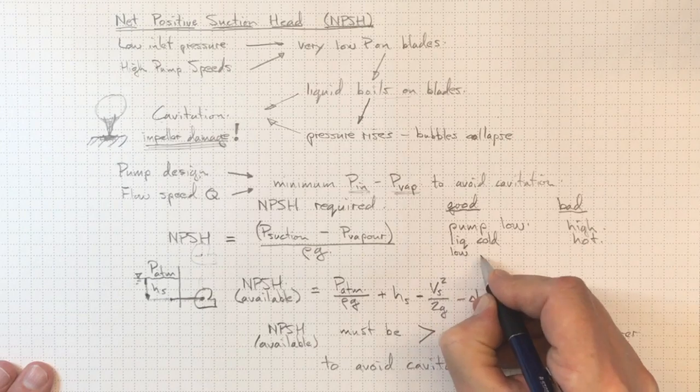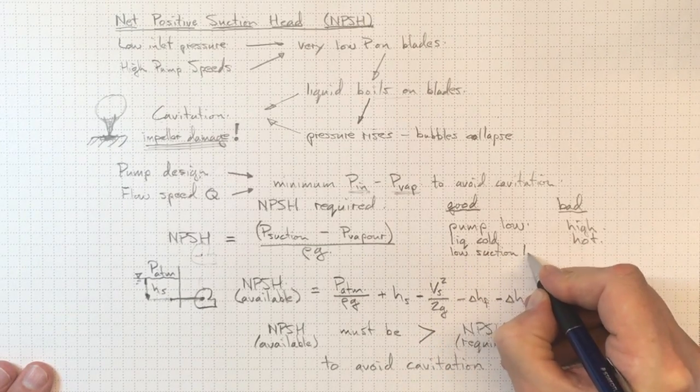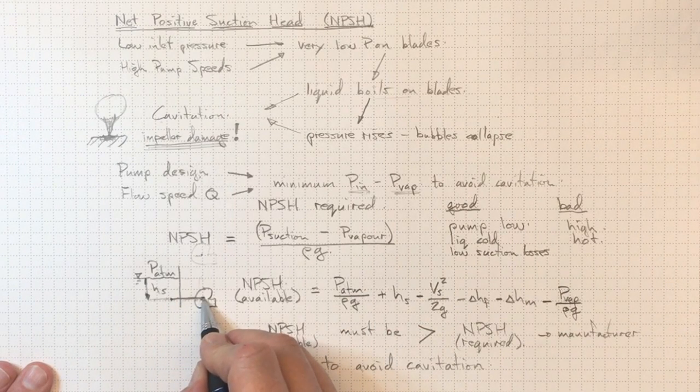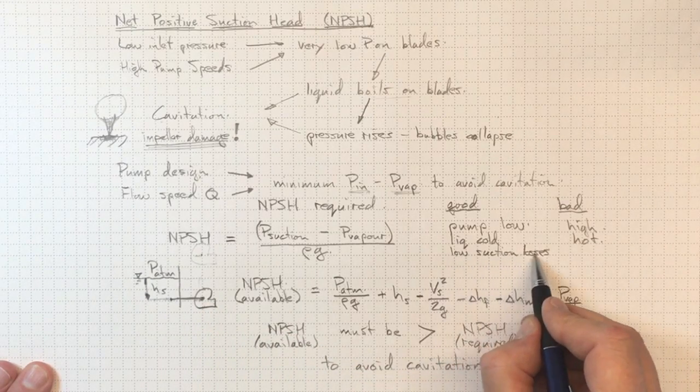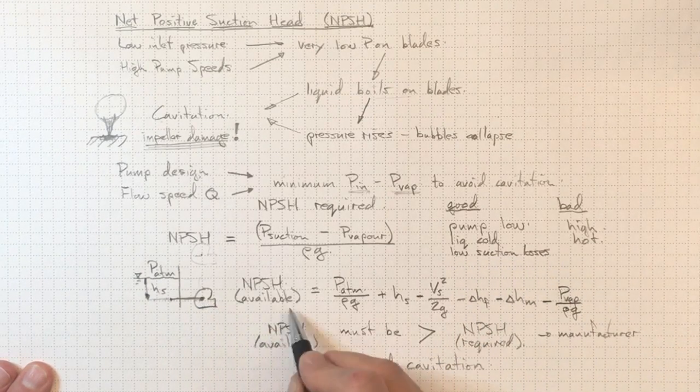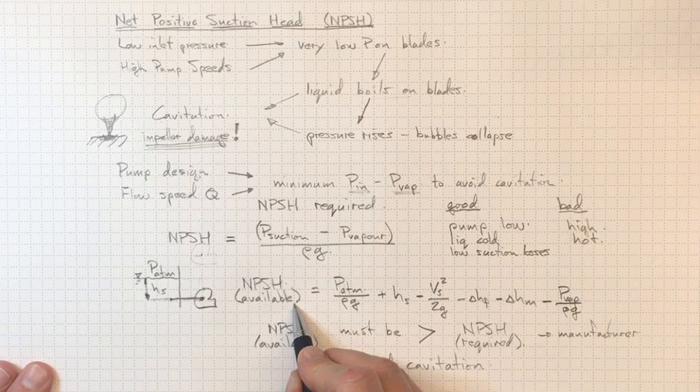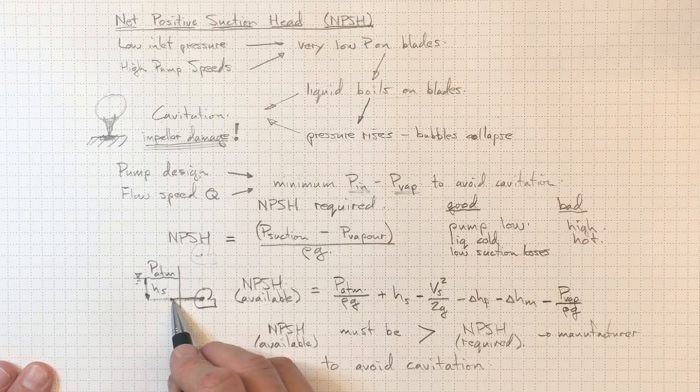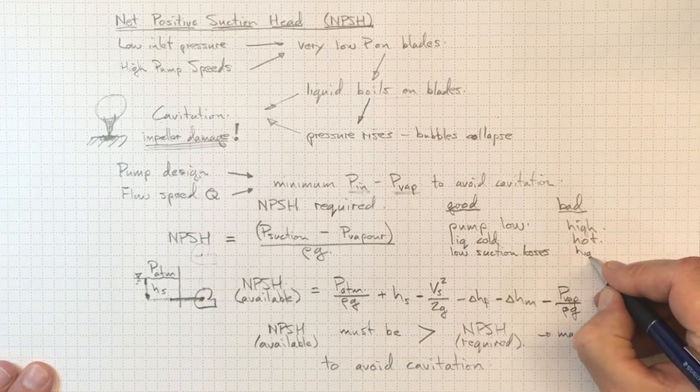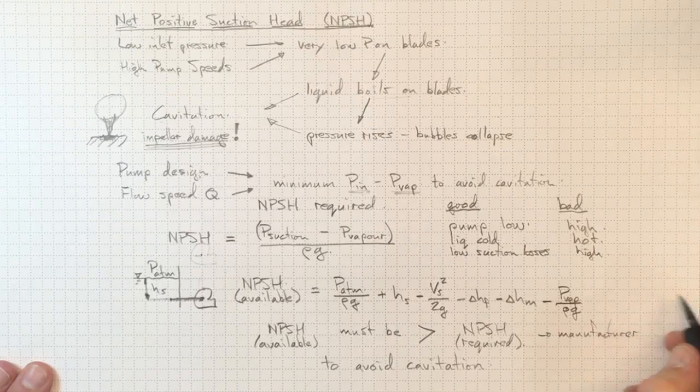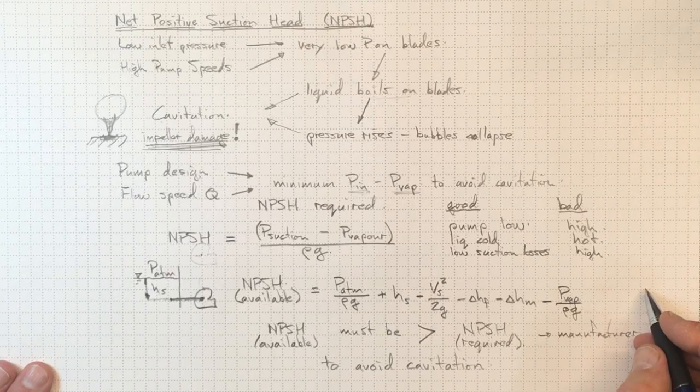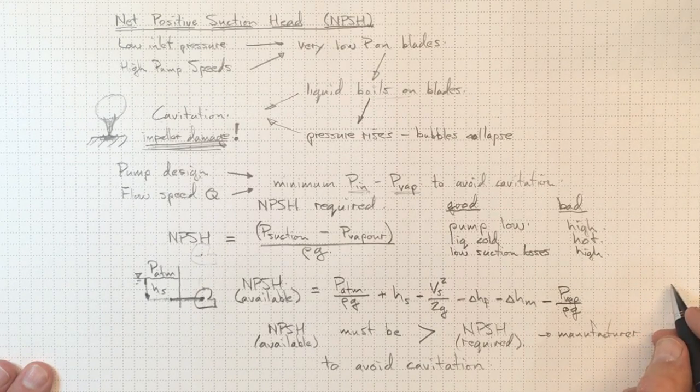Low suction losses will be good. If we've got a short pipe, that'll be good. If we manage to avoid having a whole lot of fittings and valves on the suction side, that'll be good. Anything that allows us to have low suction losses is going to increase the pressure and increase the NPSH that we've got available. On the other hand, bad. A long length of pipe there with a whole lot of fittings in it, we'd have high suction losses and we could run into NPSH problems. We could get cavitation and wind up damaging our impeller and reducing the life of our pump quite significantly.